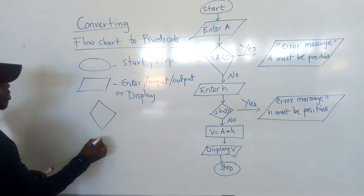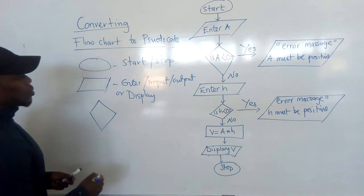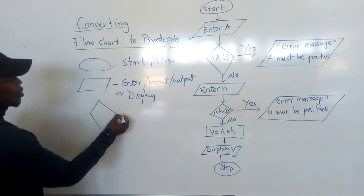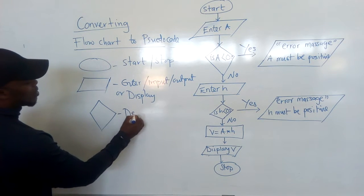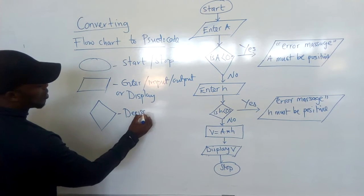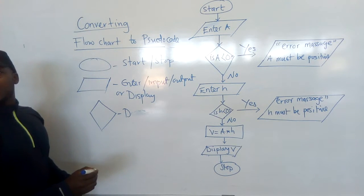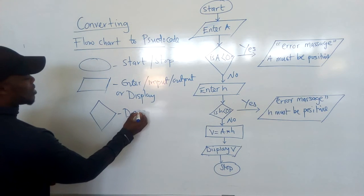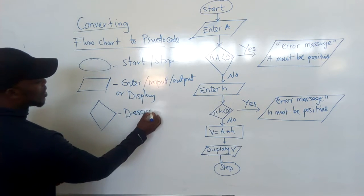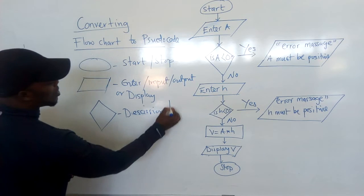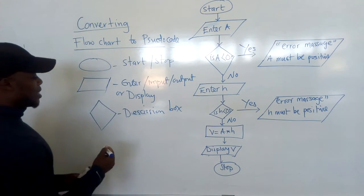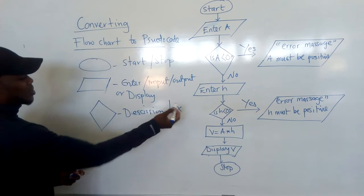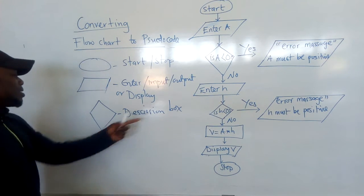Then there is this other shape — a rhombus or diamond shape. This is the decision box. This is where we make a decision. I'm a mathematics teacher, not an English teacher, so you can search the correct spelling for decision. So this is the decision box.